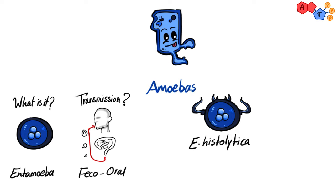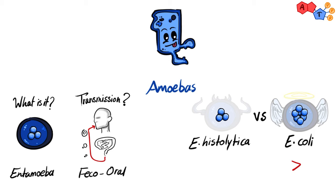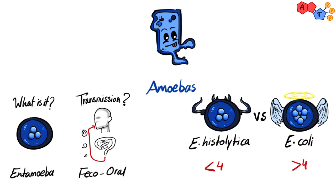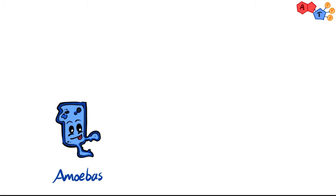It's very important to differentiate Entamoeba histolytica from other species such as Entamoeba coli, which is non-pathogenic. E. coli and E. histolytica can be differentiated by the number of nuclei in the cysts. If there are more than four nuclei, it's E. coli; if less than four, it's Entamoeba histolytica.